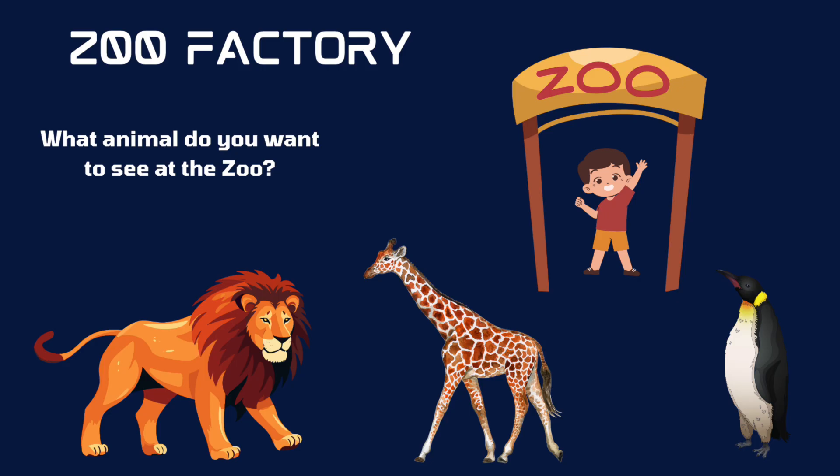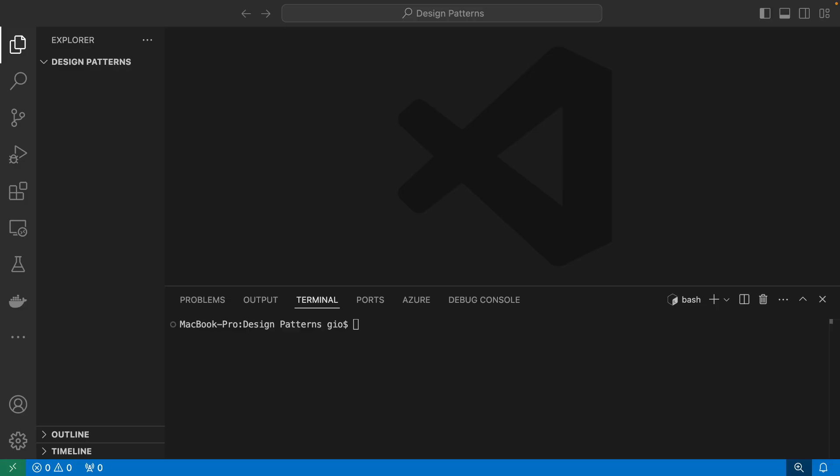In my example, I'll be using a zoo factory that will create animals for us. Because when you go to a zoo, you want to be able to see animals. The first thing we need to define is the classes for the objects we want to create from the zoo factory. Let's get started with two basic animal classes: lion and giraffe.